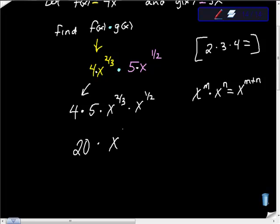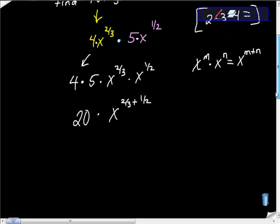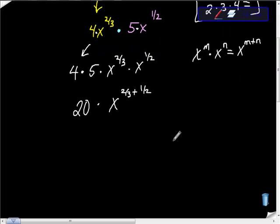So now I have x to the two-thirds plus one-half. We don't have common denominators, so let's do some side math: two-thirds plus one-half. We need common denominators. The least common multiple of 3 and 2 is 6.